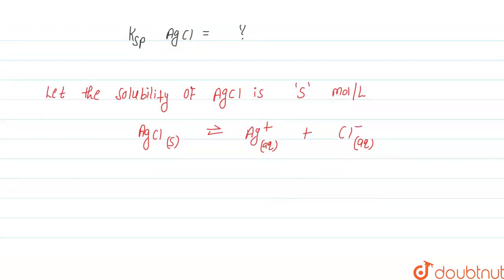Initially AgCl is 1, and after dissociation it becomes 1 minus s. When 1 mole of AgCl dissociates, 1 mole of Ag⁺ is formed and 1 mole of Cl⁻ is formed. Therefore, s moles of Ag⁺ and s moles of Cl⁻ are formed. So we can write the Ksp expression for AgCl.